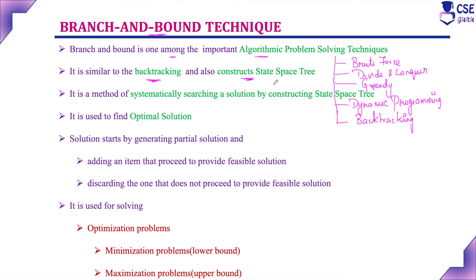Whenever it reaches a dead end, backtrack to the previous level and consider the other possibilities from that level. Likewise, the procedure continues in backtracking technique. Branch and bound technique also constructs the state space tree to find the optimal solution.